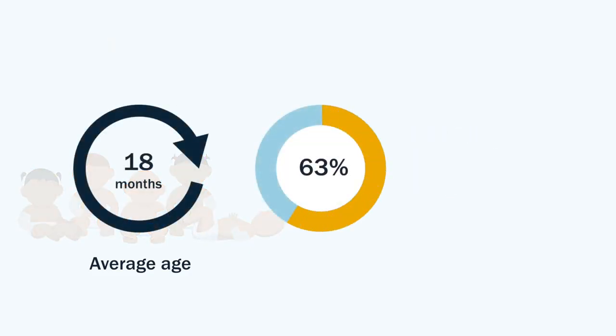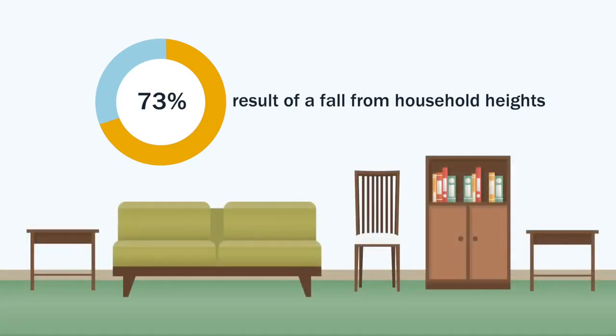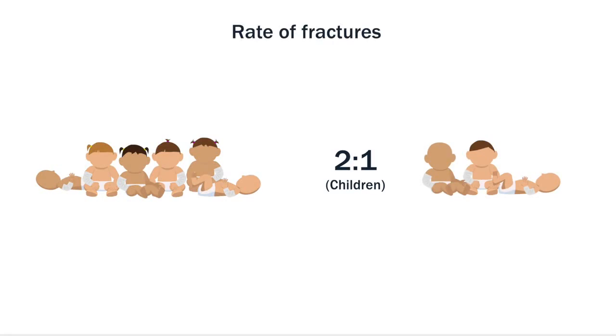63% of the children had a type 3 displaced fracture. 73% of the fractures were the result of a fall from household heights. They also found that the ratio of females to males was 2 to 1.